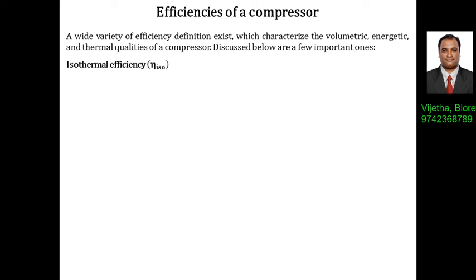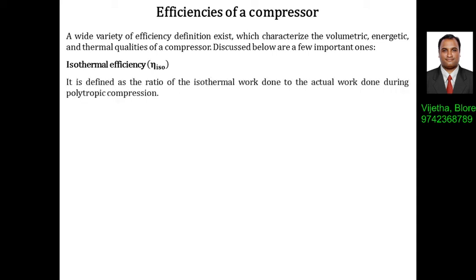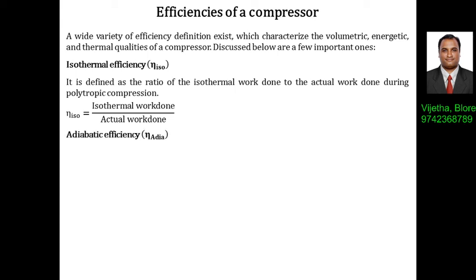One such efficiency we are going to discuss is called isothermal efficiency. It is defined as the ratio of isothermal work done to the actual work done during the polytropic compression. Mathematically, isothermal efficiency η_iso is equal to isothermal work done divided by actual work done. This is called isothermal efficiency.